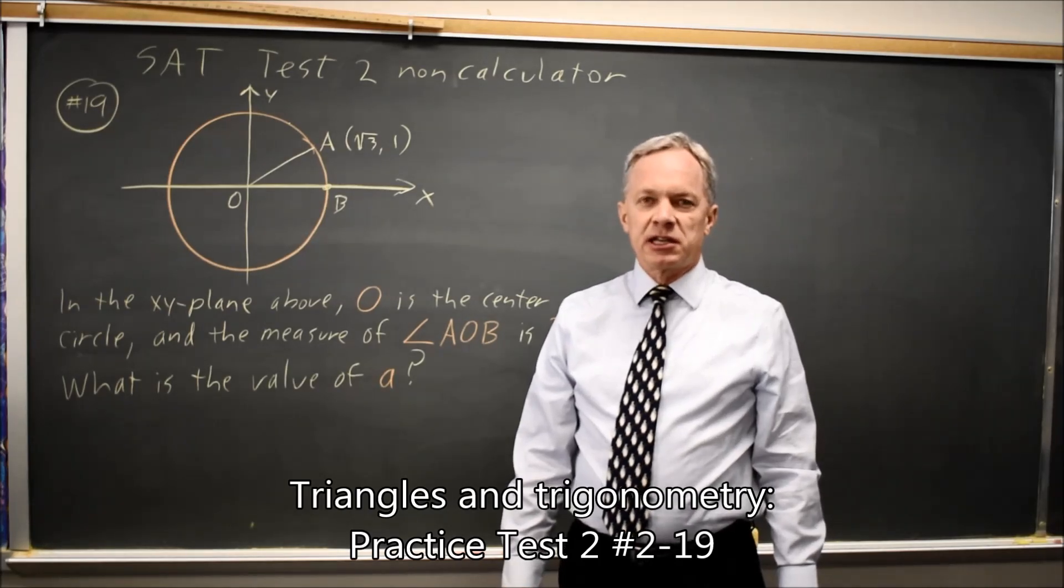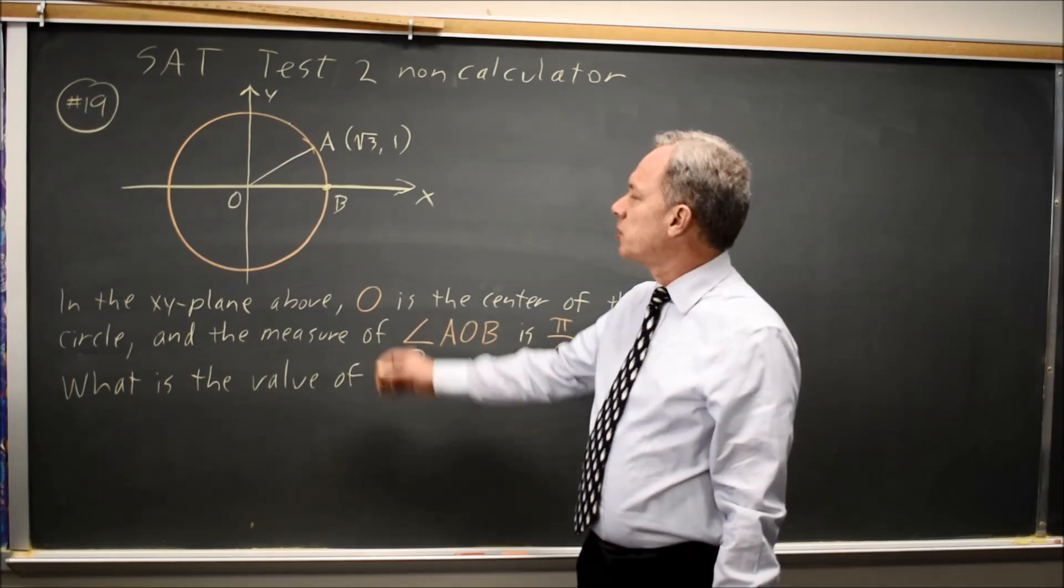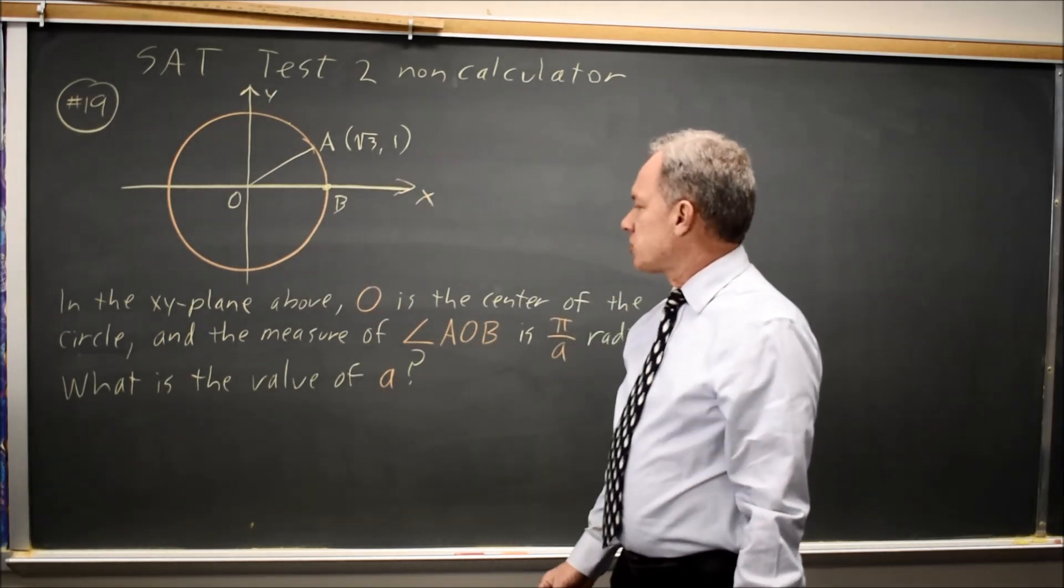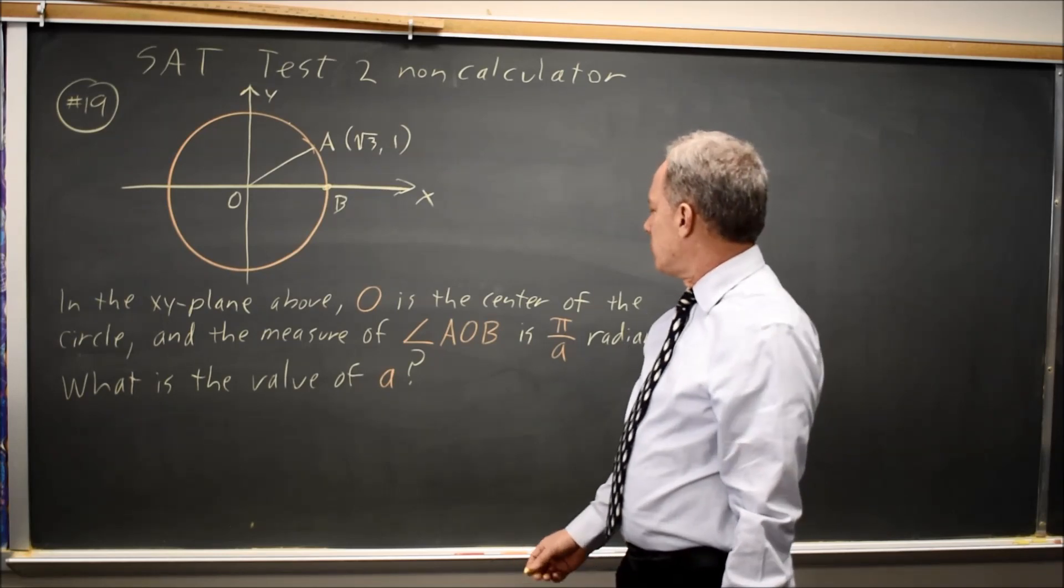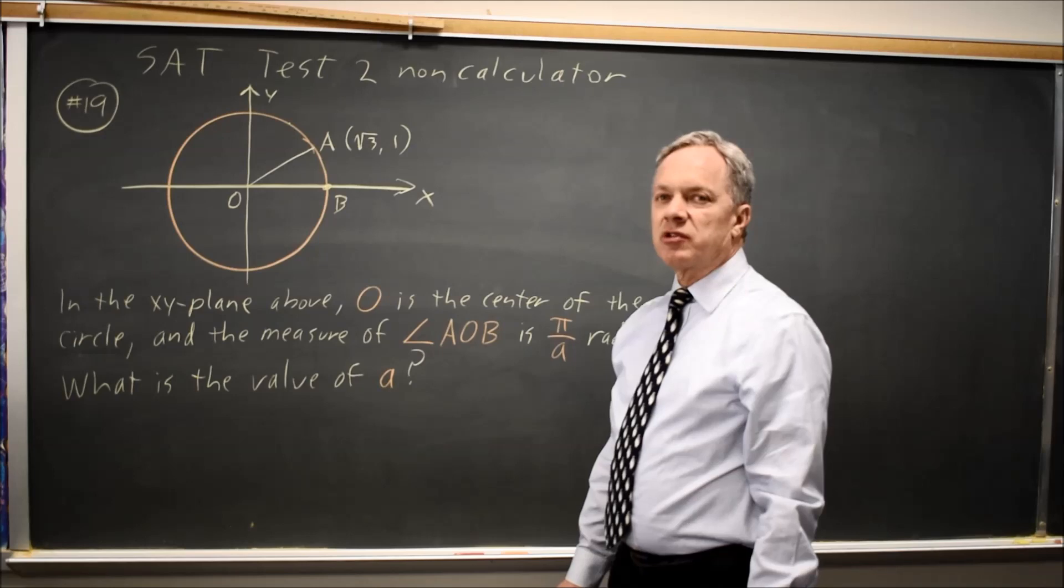This is SAT test 2, non-calculator question number 19. College Board gives us a circle with a point on the circle labeled point A, and they tell us O is the center of the circle, and the measure of angle AOB is pi over a radians, and they ask for the value of a.